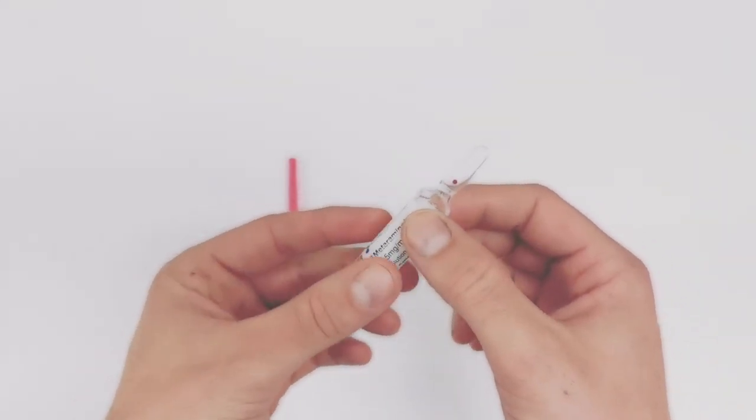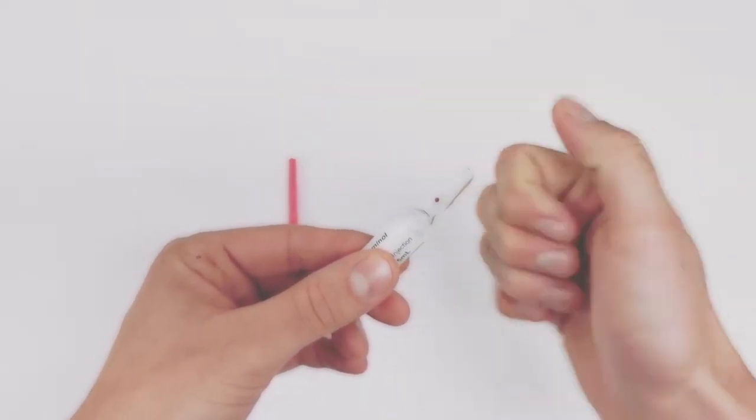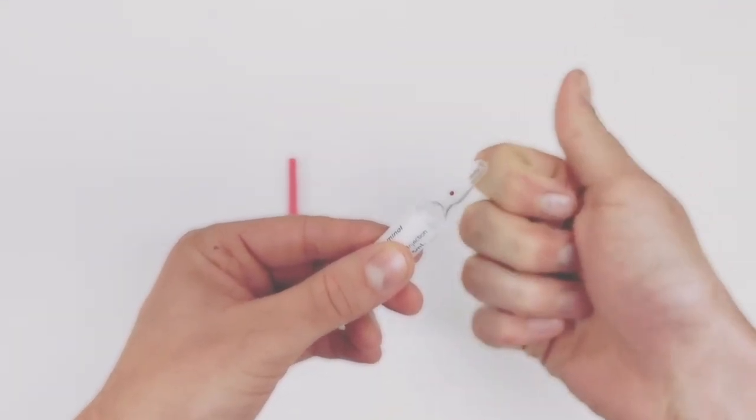Now the key to opening a vial is to do a twisting-off-the-top motion. You are popping the top off. You're not squeezing it and you're not twisting like that. You're just popping the top off.